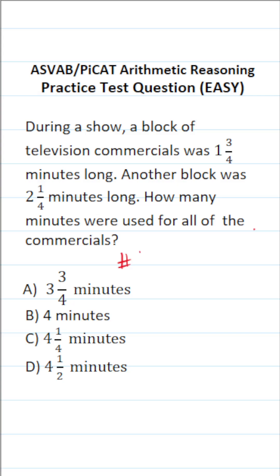Since this problem is pretty straightforward, I'm going to show you how to solve it two different ways. The first way involves a lot of mental math, and the second way is the more traditional approach to solving this one. Regardless, we know we're going to add the length of each of these blocks of commercials together. So that's going to be one and three fourths plus two and one fourth.